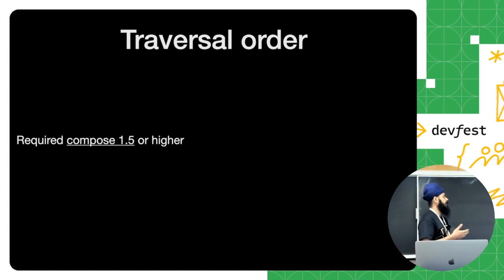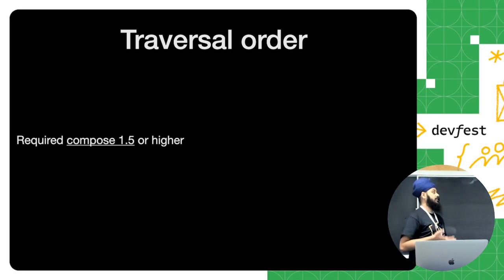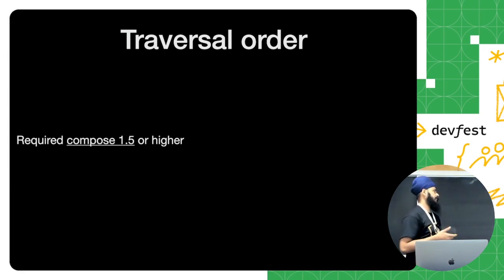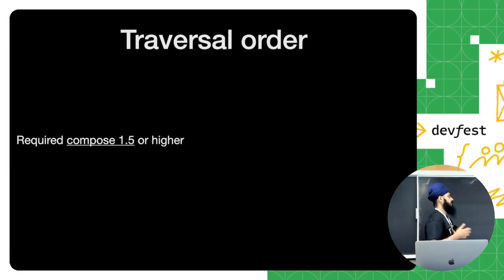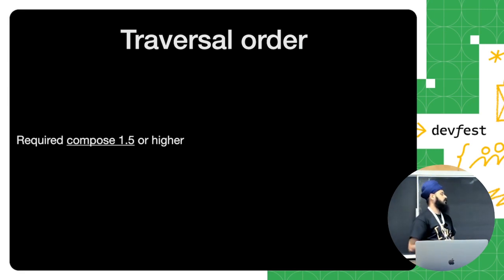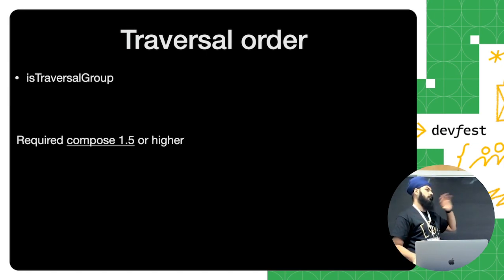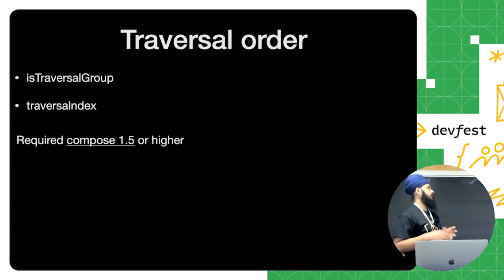For traversal order in Compose, there are two properties. The first is `traversalGroup`, which goes on the parent — like a Column, Row, or Card. The second is `traversalIndex` on child components. A lower traversal index means higher priority — it will be processed first. You set `Modifier.semantics { traversalGroup = true }` on the parent Column, telling the system how to process it, then set the traversal index as a float value on child components.